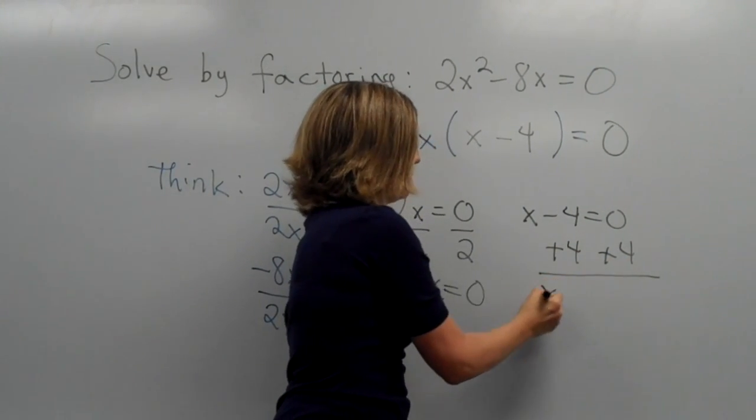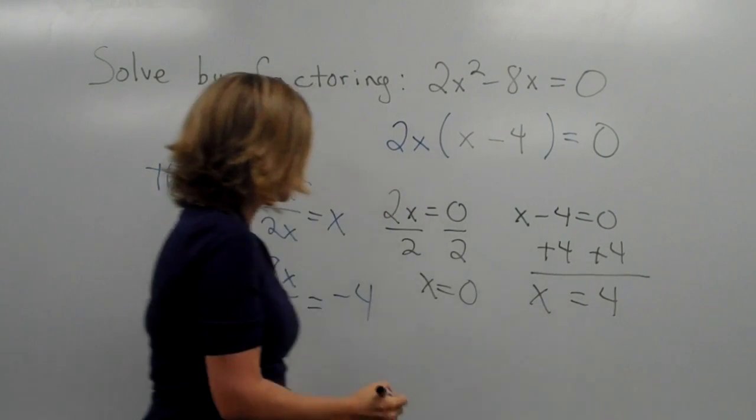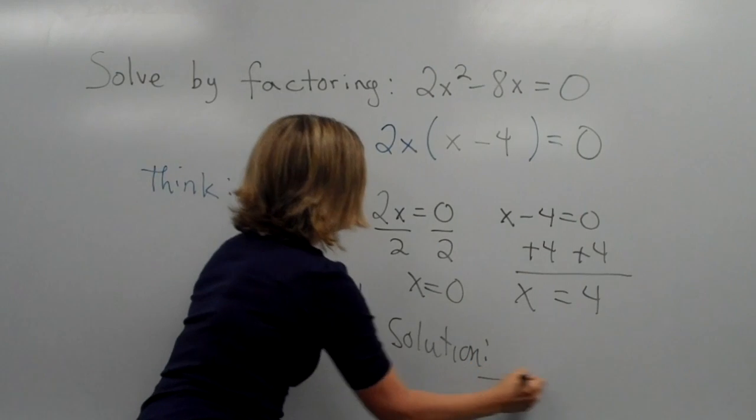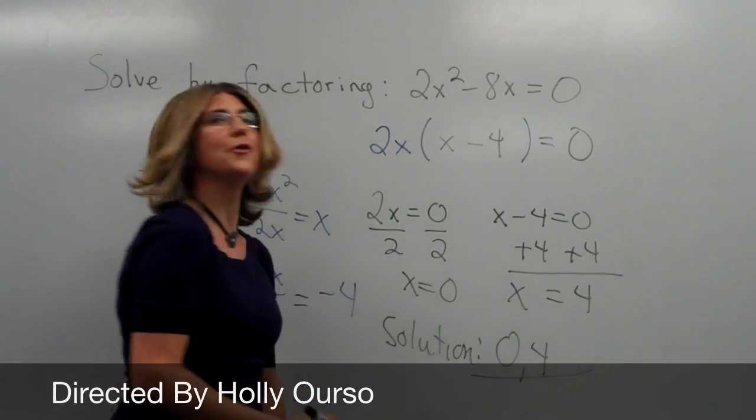Of course, in math, we do that to both sides, which gives us x equals to 4. So our solutions will be 0 and 4.